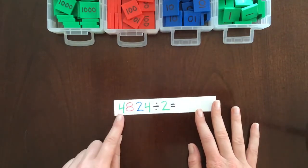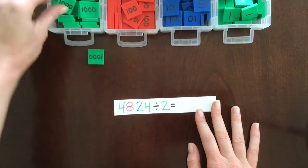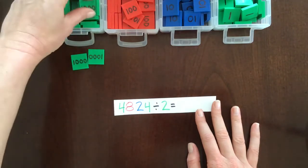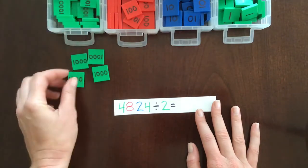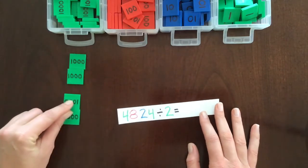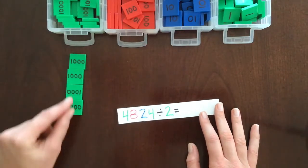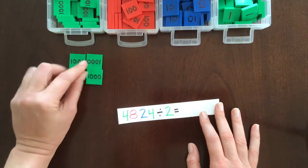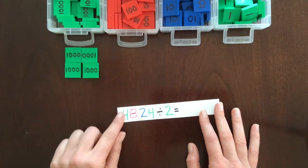Okay, so we have 4 thousands. 1, 2, 3, 4, and again, typically these are stacked like this vertically, but I am going to put them like this so they all fit in the frame.